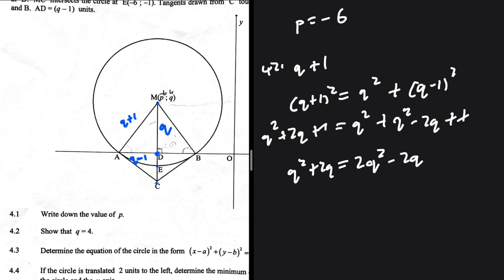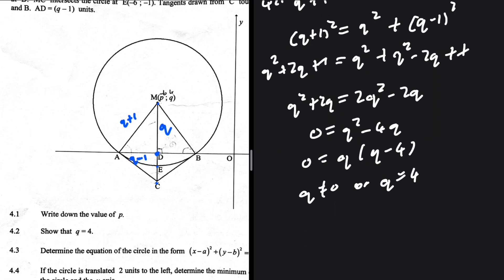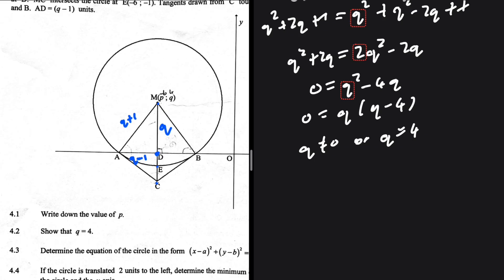Rearranging everything to one side: 0 = 2q² − q² − 4q, which simplifies to 0 = q² − 4q. Taking q as a common factor: 0 = q(q − 4), so q equals zero or q equals four. We know q is supposed to equal four, as we were asked to prove. That is 4.2.